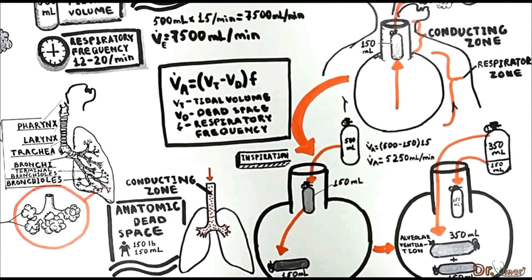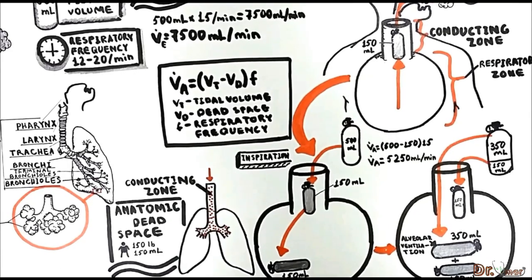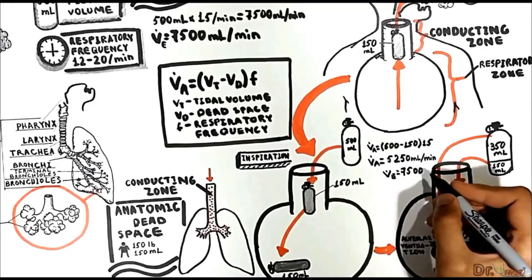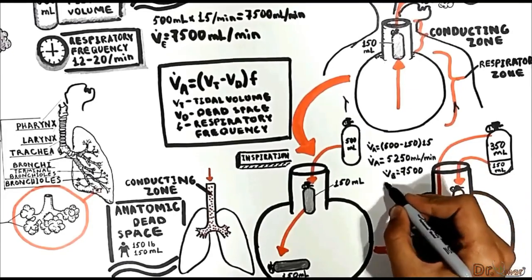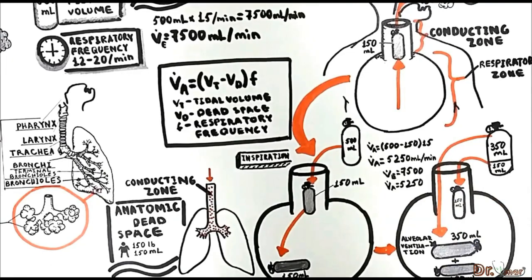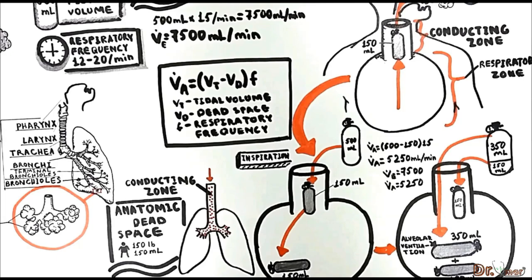To sum it up: total ventilation is much greater than alveolar ventilation — 7500 mils per minute versus 5250 mils per minute, respectively. This equation shows that the volume of fresh air entering the respiratory zone per minute depends on the pattern of breathing. If you breathe deep and increase the rate of breathing, you increase the ventilation.